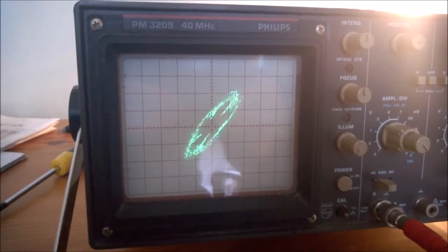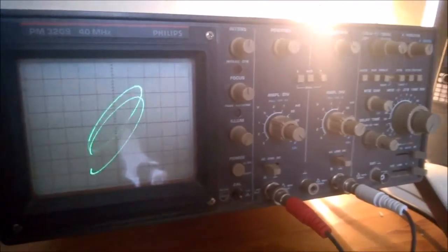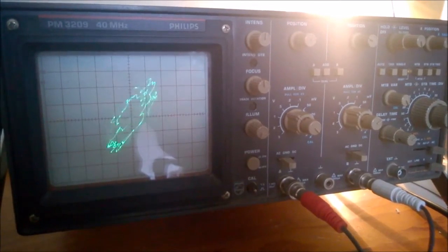Now we add a sawtooth waveform to the right channel. Our circle, or ellipse, turns into a spiral.